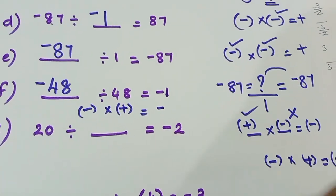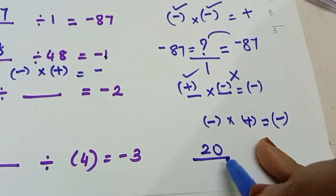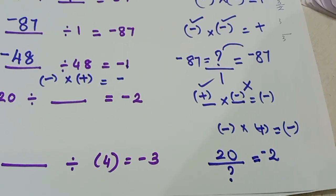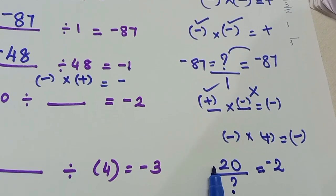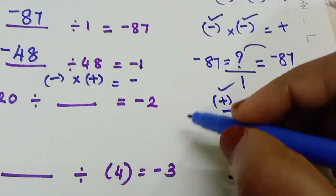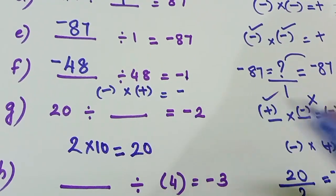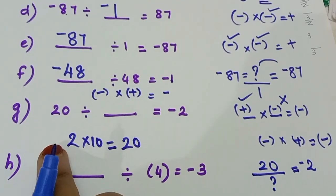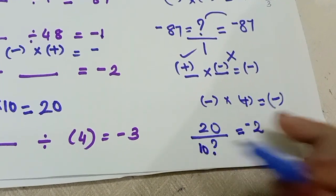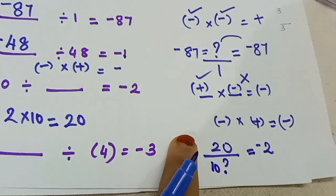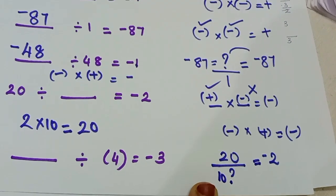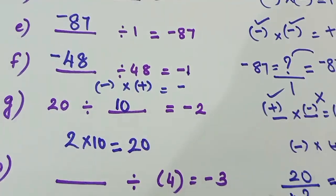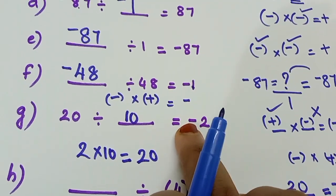20 divided by dash is equal to minus 2 — that is what we have asked. When 20 is equal to minus sign, there is minus sign, there is no sign. What number is 10? We divide it by 10. Because 2 is not 10. How do we do this? We divide it by 20. We multiply it by 10. Divide it, we divide it by 10. The answer is minus sign.